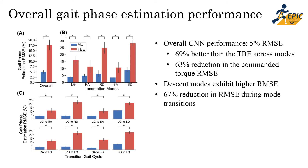Overall, our gait phase estimation method using the CNN architecture significantly outperformed the time-based estimation (TBE) method. In general, our CNN had about 5% RMSE across all modes, reflecting approximately 69% better performance than TBE. This 69% improvement in estimation performance corresponds to about a 63% reduction in commanded torque RMSE, demonstrating that accurate gait phase estimation has a substantial effect on the actual joint torque provided to the user.